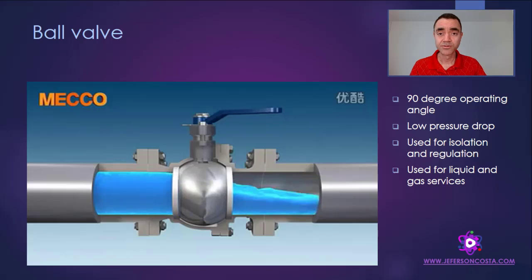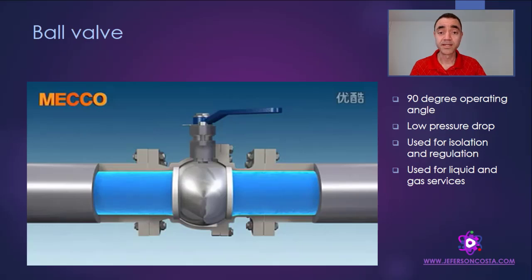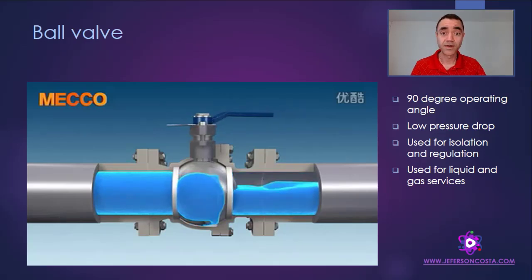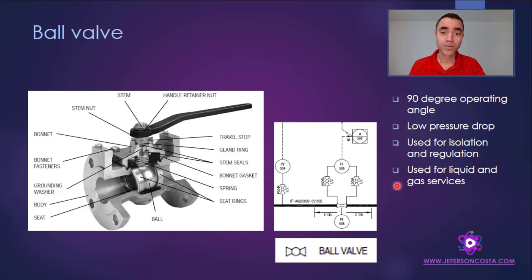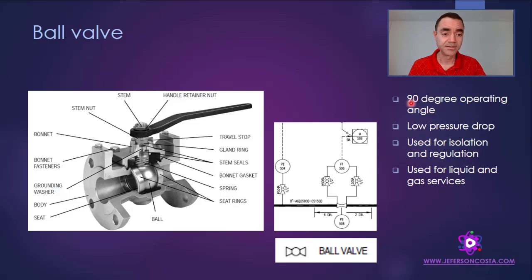Another valve commonly used in the industry is the ball valve — and to be sincere, it is my favorite valve — because it can be used for both regulation and isolation, depending on the process characteristics. When you need a higher pressure drop to control your process, you would select a globe valve, but when you need to control a system and the available pressure drop is very low, a ball valve will often be the best choice.